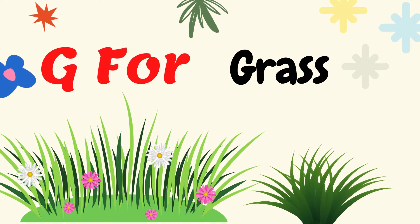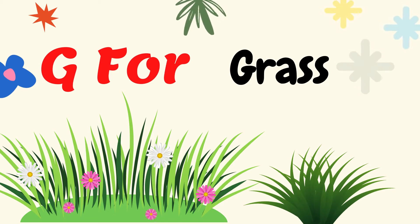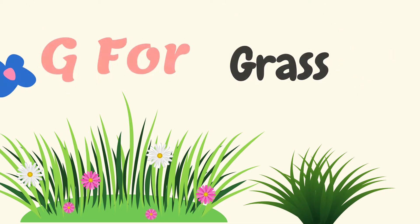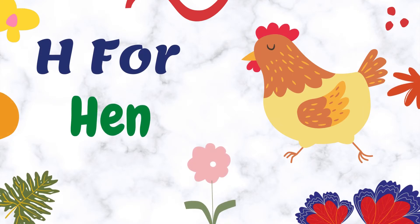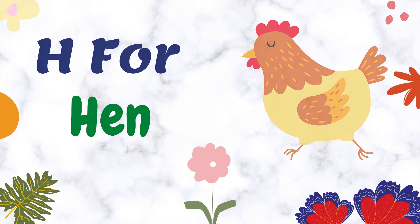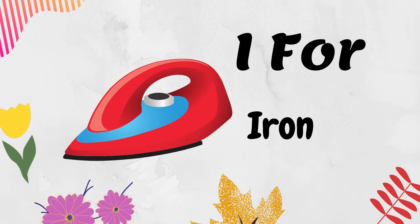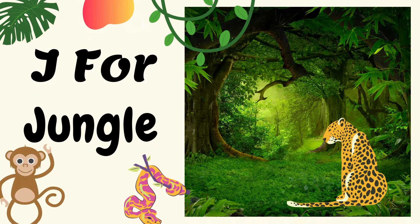G for grass. And what is H for? H for hen. And what is I for? I for iron. Then J for? J for jungle.